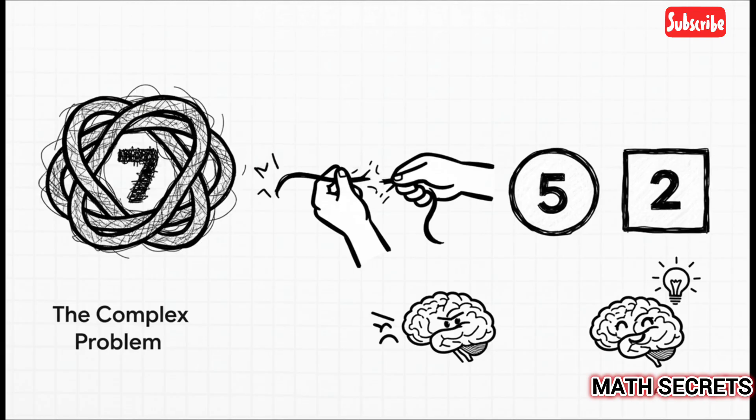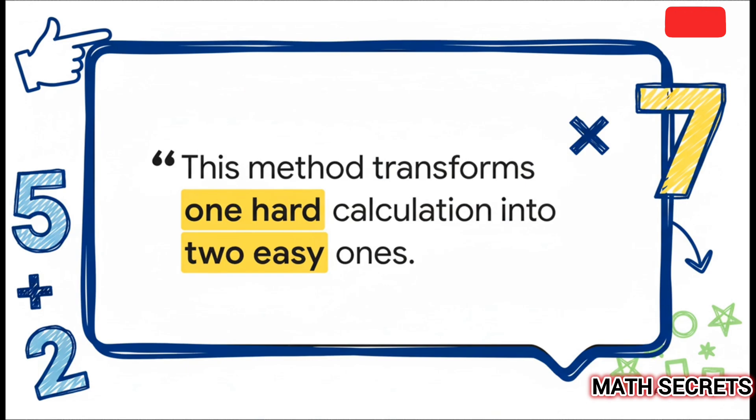It cleverly swaps out the tricky sevens table with the two tables most people learn first and know best. The fives and the twos. The result is just a much smoother process for your brain. And that's really the crucial point here. This isn't about adding more steps. It's about reducing the mental strain. It completely reframes the challenge, transforming one calculation that feels really hard into two that feel incredibly easy.